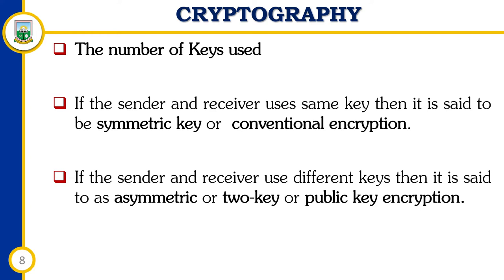Depending on which key is published, public key encryption can serve two purposes. If the locking key is made public, the system can be used by anybody to send private communication to the holder of the only unlocking key. The other way round allows the system to verify documents signed by the owner. Public key encryption is an asymmetric key algorithm.